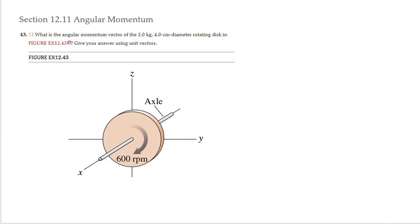So what they give us: they give us a solid disc that is rotating at 600 revolutions per minute, clockwise.